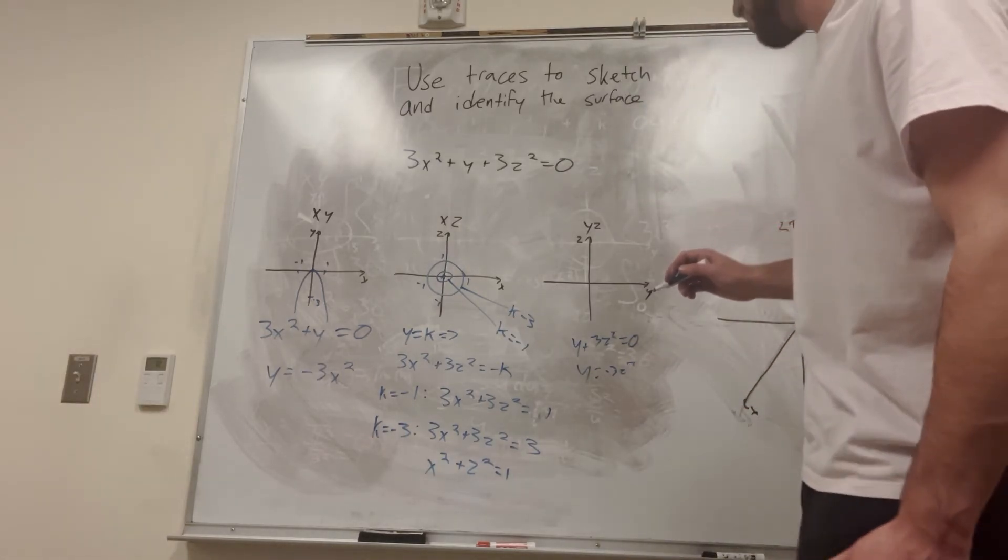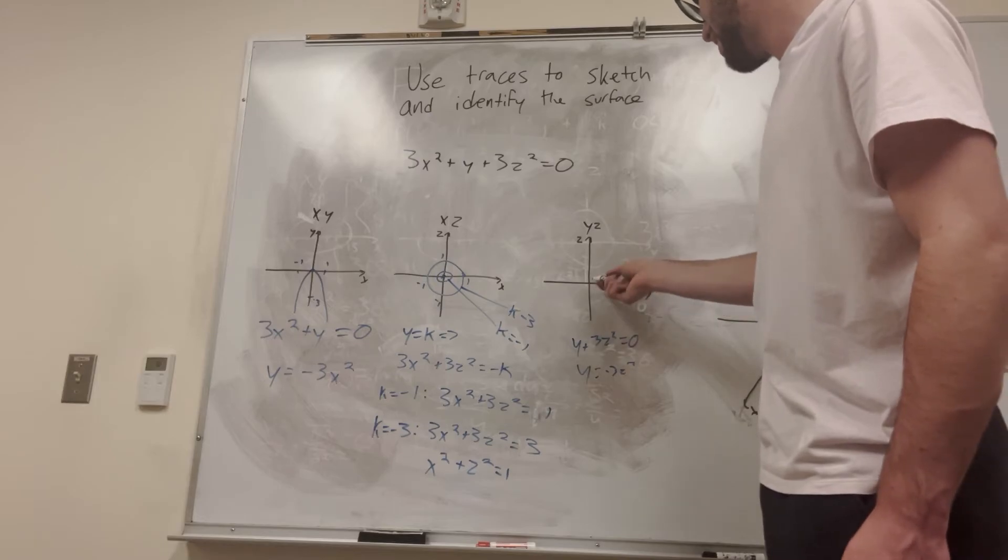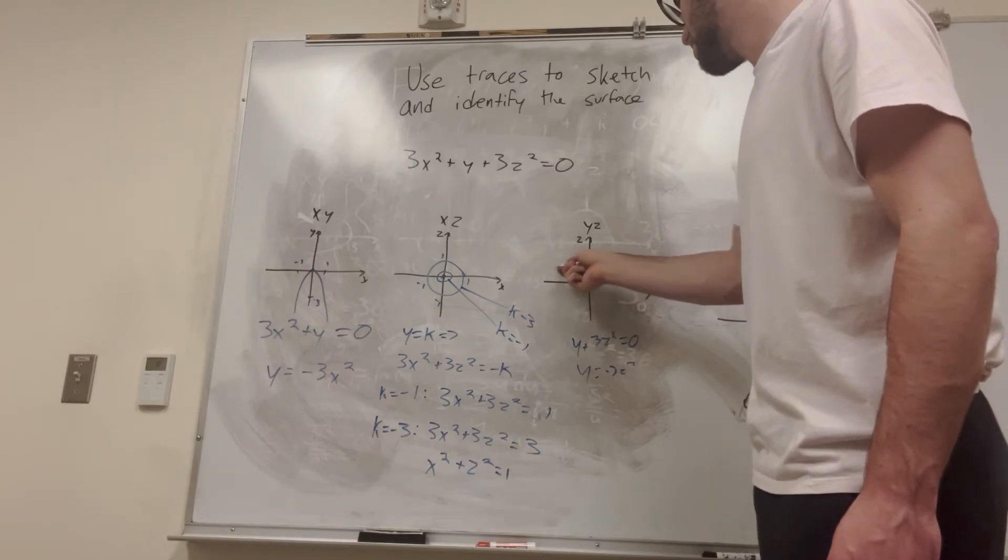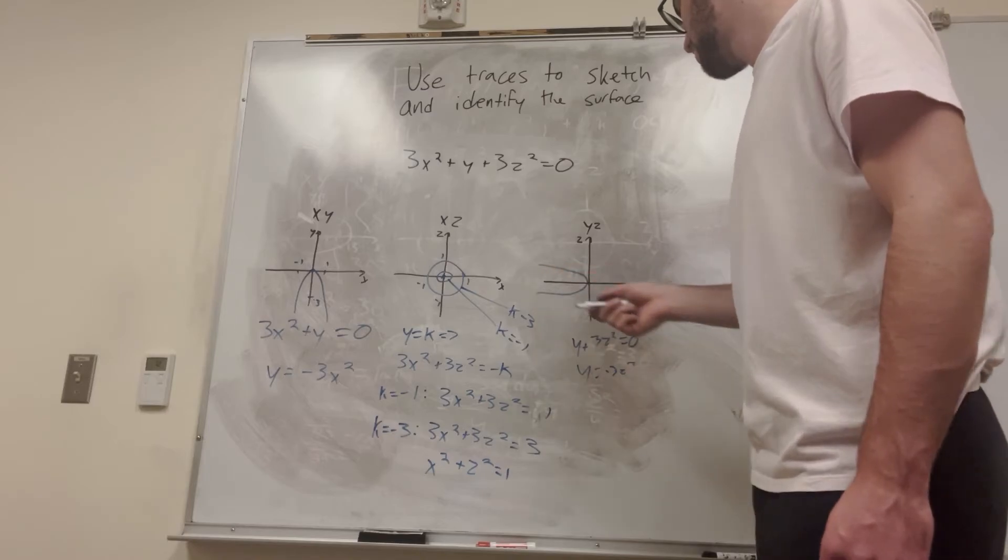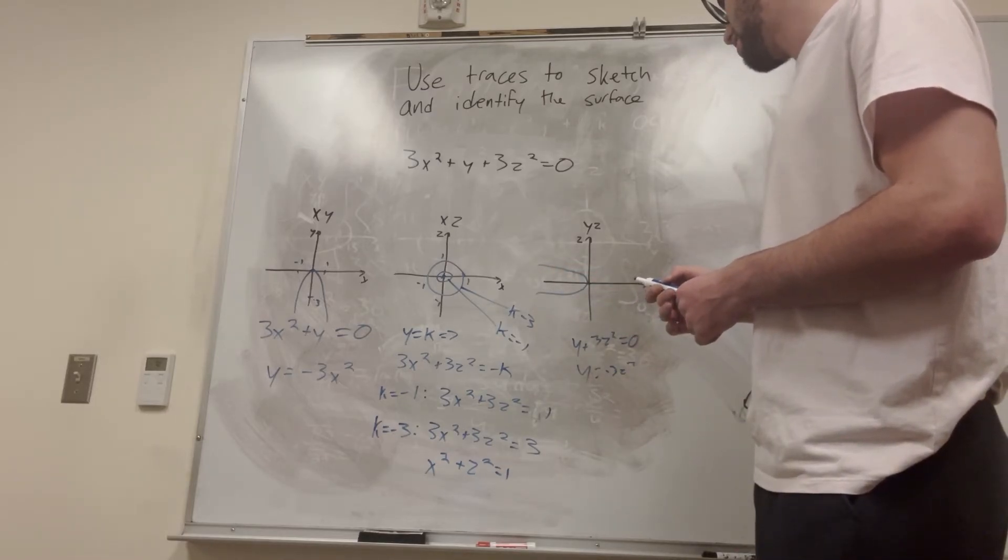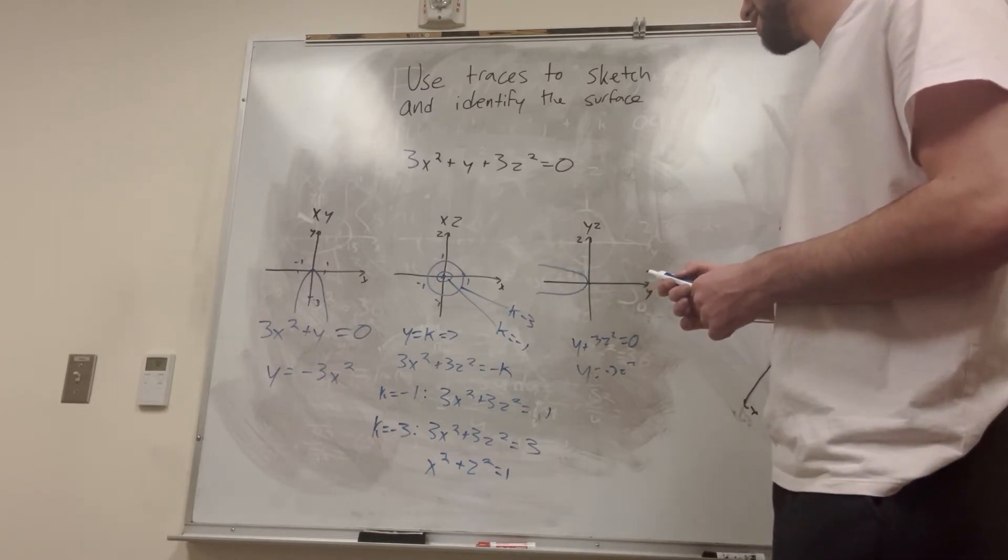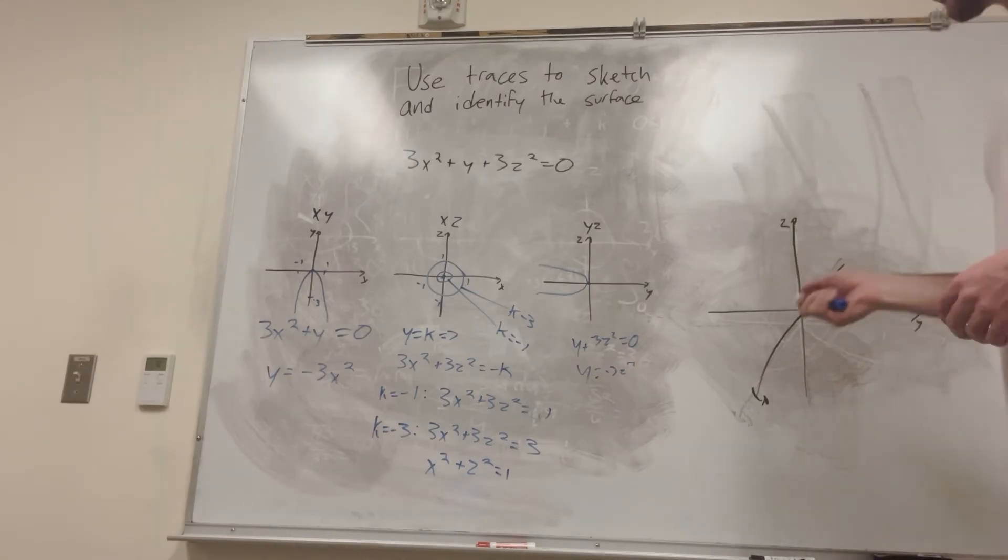So if z is equal to 1, y is going to be equal to negative 3, right? It's going to look something like this. Am I right about that? Yes, I am right about that. Alright, so now that we have our three traces, we can go ahead and just put them into our graph. That's how we're going to do it.